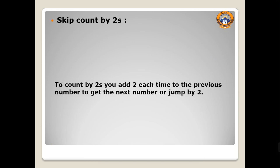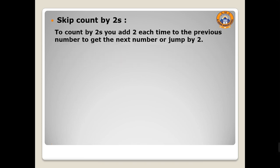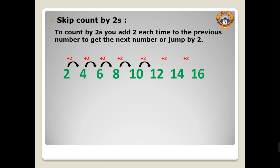Then skip count by 2s. To count by 2s, you add 2 each time to the previous number to get the next number, or jump by 2. For example, when you start with number 2 and add 2, you will get 4. Add 2, you will get 6. Add 2, you will get 8. Each time add 2: 10, 12, 14, 16 and so on.